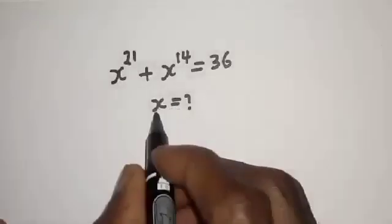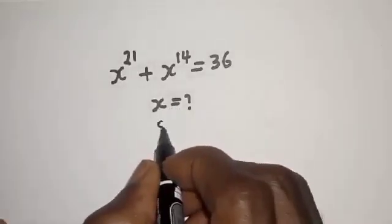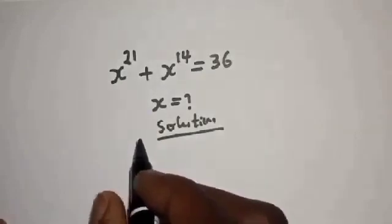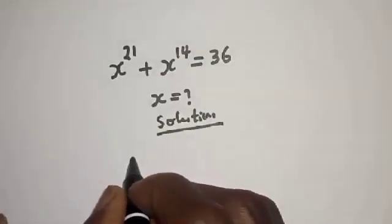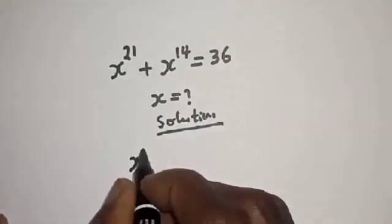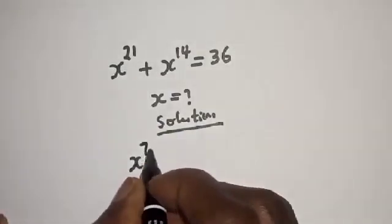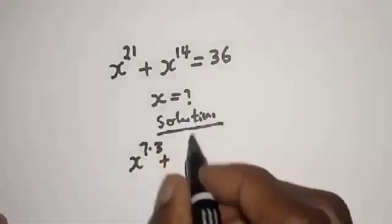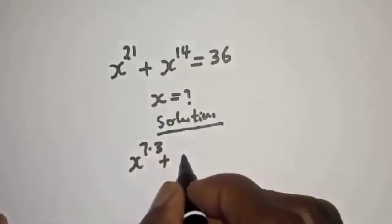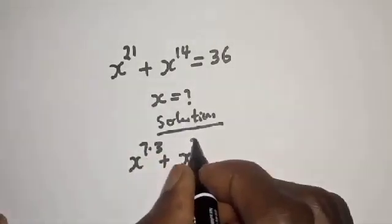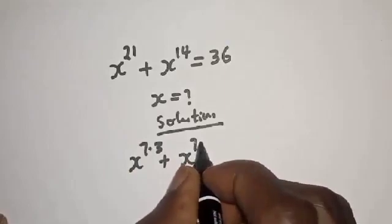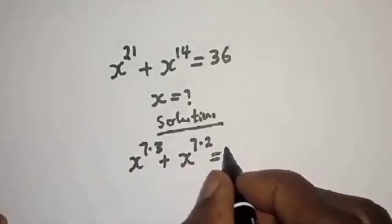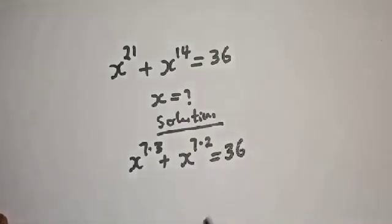What is the value of s? The solution: s raised to power 21 can be written as s raised to power 7 multiplied by 3, plus s raised to power 14 can be written as s raised to power 7 multiplied by 2, and this is equal to 36.